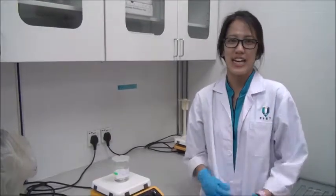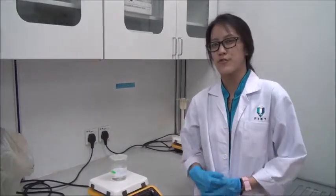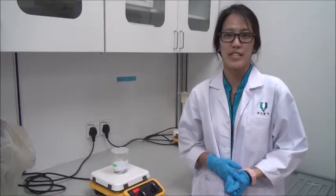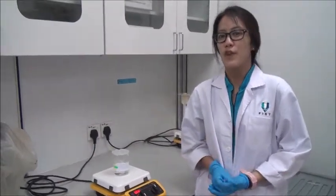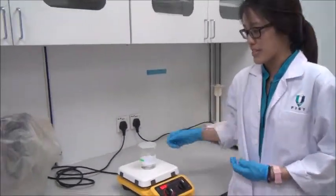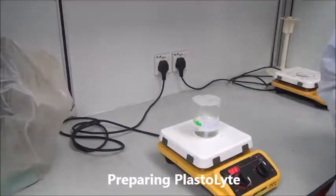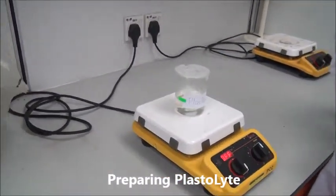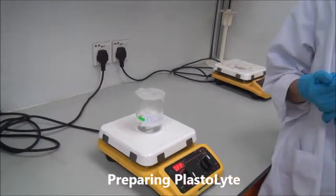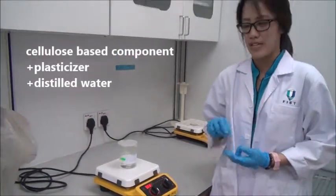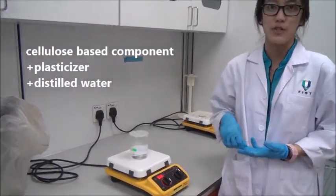Today we are fabricating a dye-sensitized solar cell using plastolite to replace the commercial electrolyte. For plastolite, this is what it looks like. To produce the plastolite, we add a cellulose-based component with a plastic cylinder and mix with distilled water.